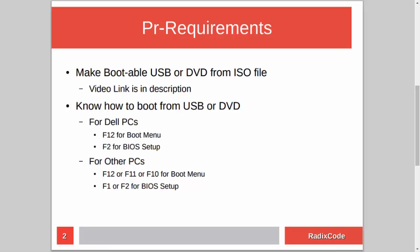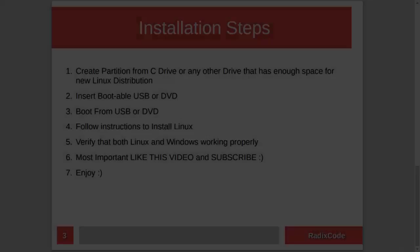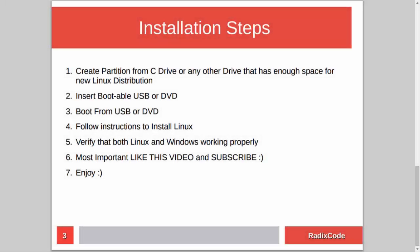The installation steps are very simple. First, we need to create an empty partition for our Linux distribution from the C drive or any other drive that has enough space. After this, we will insert our DVD or USB drive into the computer and restart. Then we will boot from USB or DVD and install our Linux distribution.